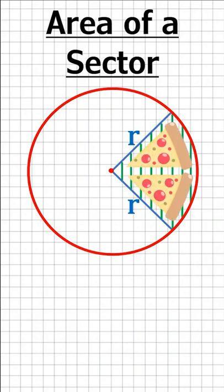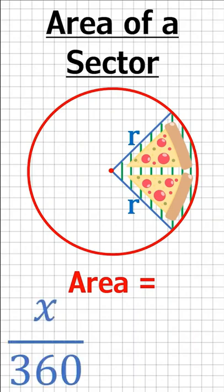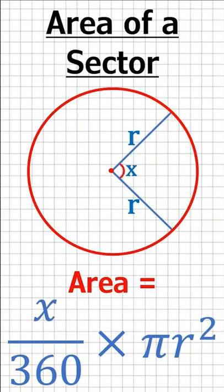Anyway, to work out the area, divide x by 360 and multiply this with the area of a circle, pi r squared. x is just the angle inside the sector.